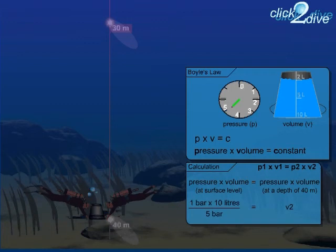At a depth of 40 metres, you have 1 bar multiplied by 10 litres divided by 5 bar, which equals 2 litres in the bucket.